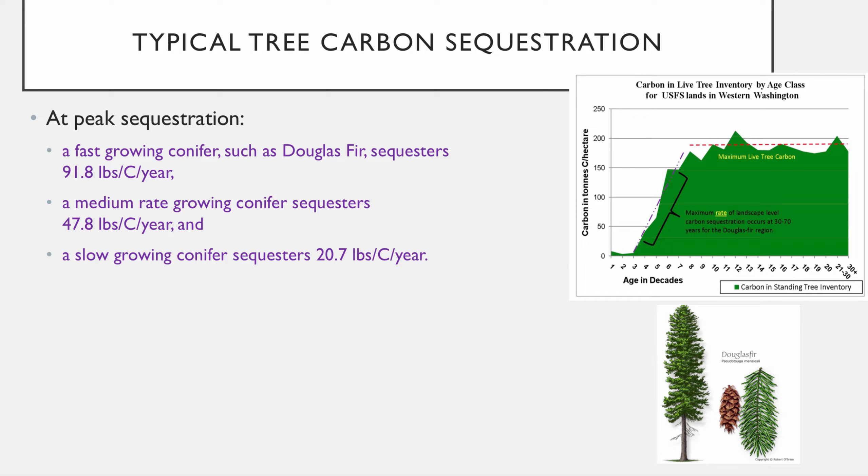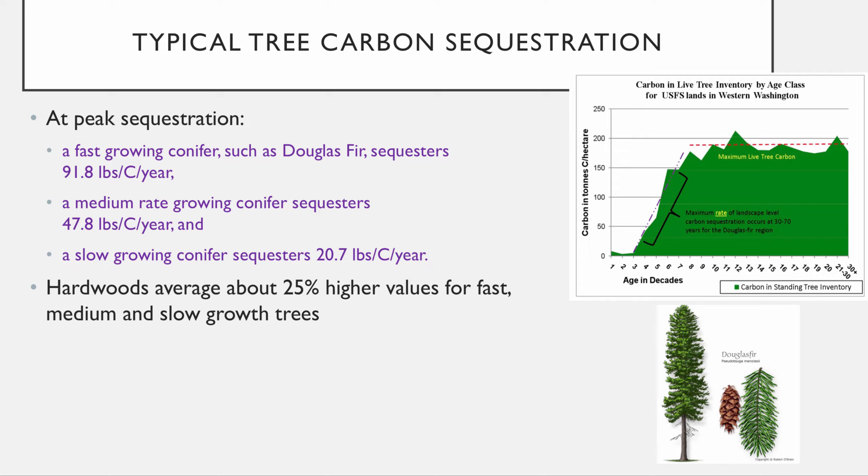Per the EPA, a very fast-growing Douglas fir might sequester as much as about 92 pounds of carbon per year per tree. A medium-rate conifer is about half that, and slow-growing conifers are around 20 pounds of carbon per year. Hardwoods can expect about 25% higher numbers across fast, medium, and slow categories. That's why cutting down rainforests in Brazil is such a concern — they're such great sequestering tools, far more impactful to lose than a slow-growing conifer forest in middle America.